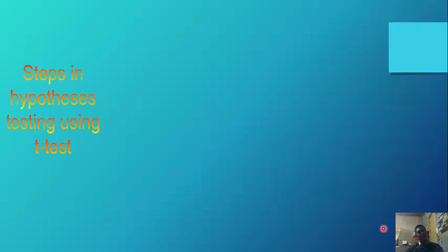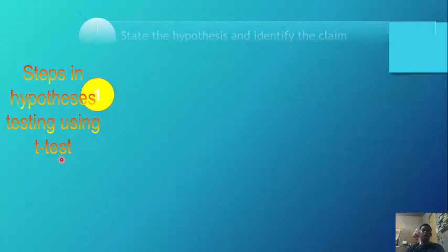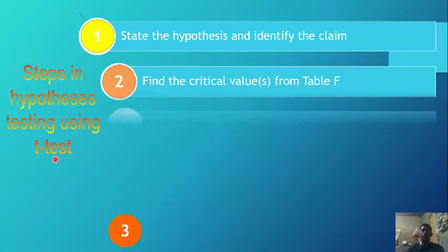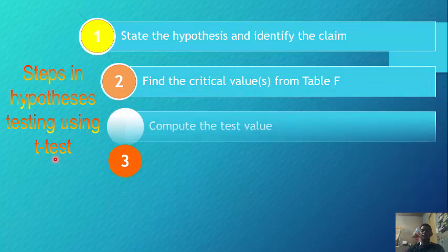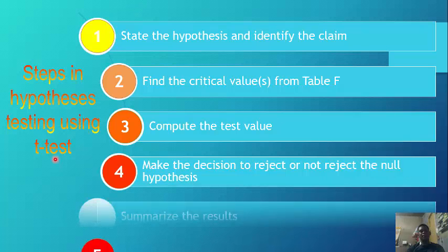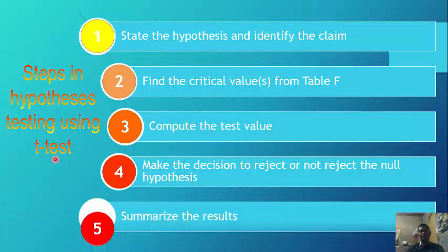The steps in hypothesis testing using the t-test are: number one, state the hypothesis and identify the claim; number two, find the critical values from the table; number three, compute the test value; number four, make the decision to reject or not reject the null hypothesis; and number five, summarize the result.